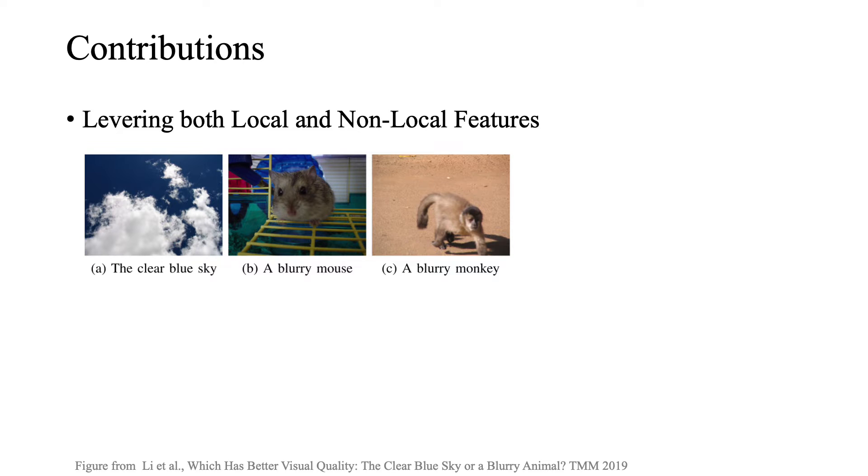In this work, we claim that IQA methods should use both local and non-local features to be effective in predicting the quality scores. For example, in this figure, Lee et al. showed that although image A has a better subjective quality score than image B and C, most IQA methods can mistake and choose the image B and C over image A. One reason for such a behavior is that currently CNNs, which are the main backbone for feature extraction among the state-of-the-art deep NRIQA models, mainly capture the local structure information of the image and they are well known for missing to capture the non-local information.